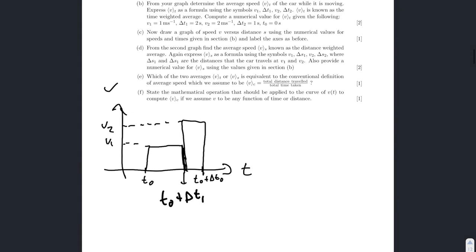So, b. From your graph, I'll just mark this as a. And this needs to be t in seconds and v in meters per second. So, determine the average speed v of t of the car while it is moving.